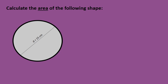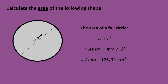Now let's have a look at the area of the same shape. The formula of a full circle is π times radius squared. We are still working with a radius of 7.5. Pop that into your calculator: π times 7.5 squared gives you 176.71 centimeters squared.